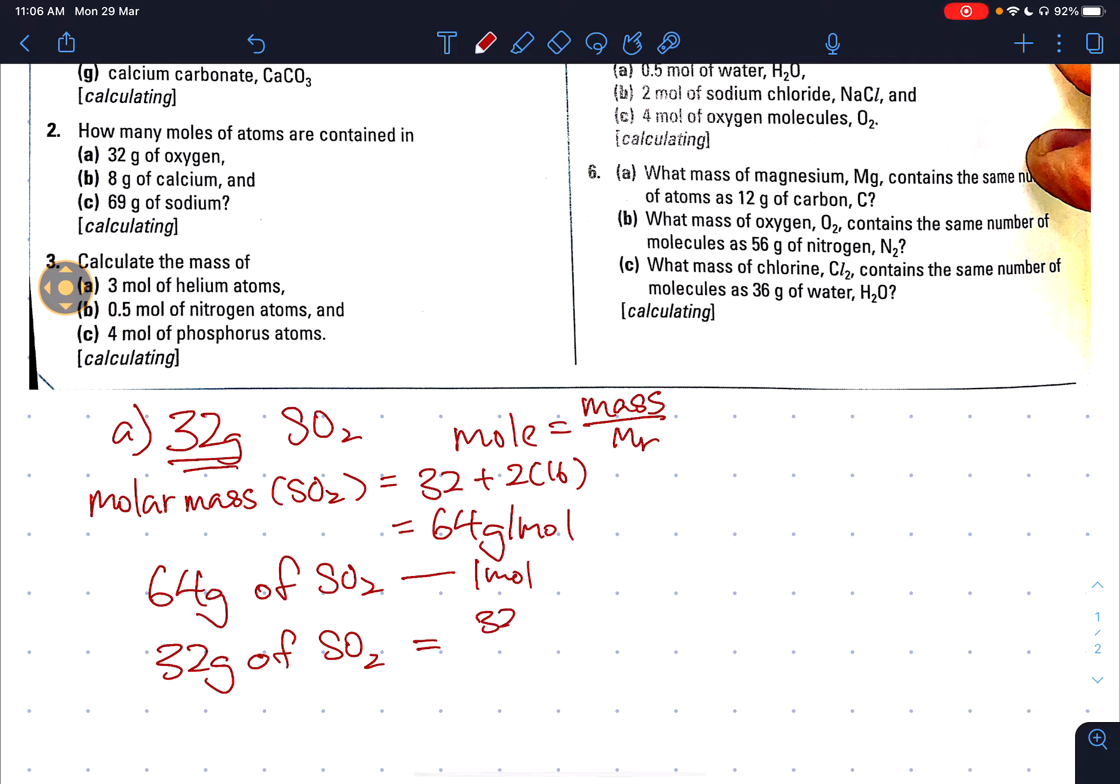So 32 grams of SO2 will therefore be equal to 32 divided by 64 equals 0.5 moles of SO2. Alternatively I can use the equation. So mole of SO2 equals the mass of SO2 given, so that's 32 grams, divided by the Mr or the molar mass of SO2 which we calculated over here, which is 64. So therefore 0.5 moles. Both will give you the same answer.